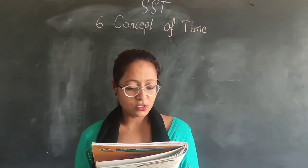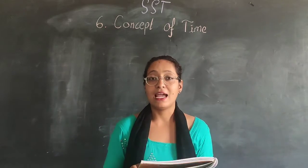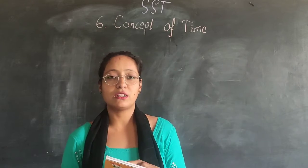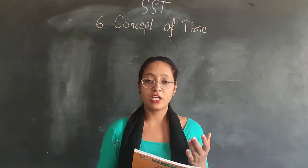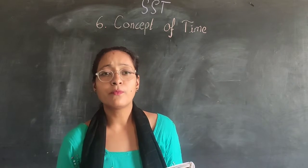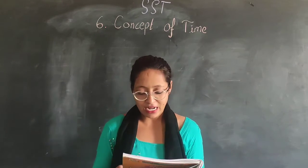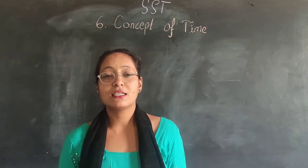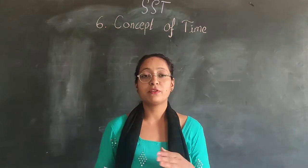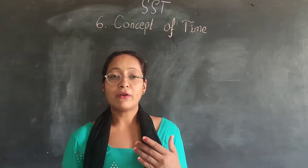Clocks and watches help us to measure time in seconds, minutes, and hours. 60 seconds is equal to 1 minute, 60 minutes is equal to 1 hour, and 24 hours is equal to 1 day. These are common things you should know about time.